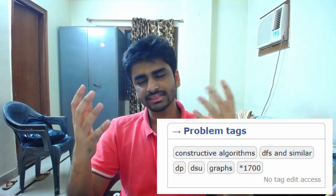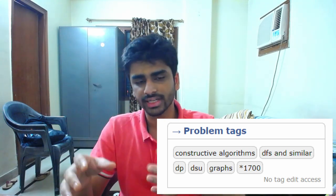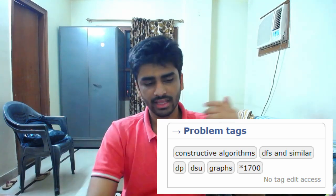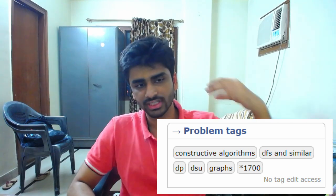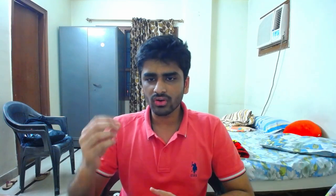Tags are hints that you shouldn't have in the first place. When you're attempting a problem in a contest, you cannot see the tags — you cannot know that this problem belongs to the DP tag or to the graph tag. So whenever you know the tag of a problem, your thinking process gets very limited. If you know that the problem belongs to the DP tag, you will only think in the DP direction, and that's a big hint you do not want before solving the problem.